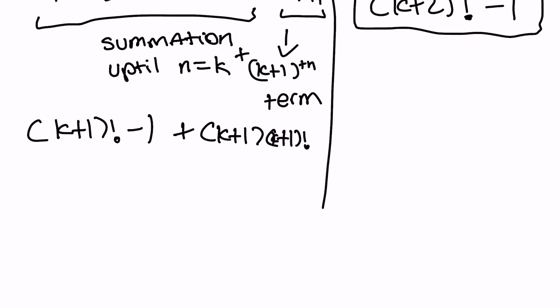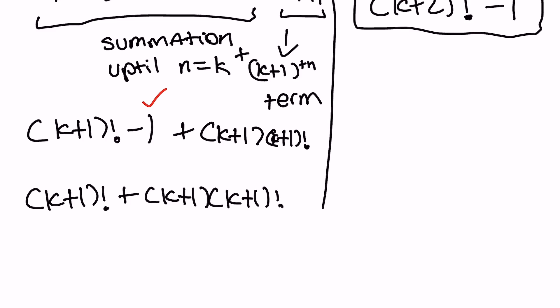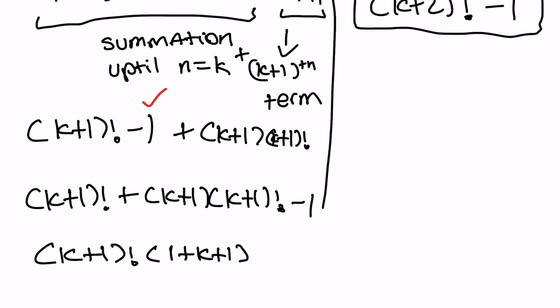Now I notice that the minus ones appear on both sides, so I'll set those aside. I'll rewrite this as k plus one factorial plus k plus one times k plus one factorial, minus one. Then I see that k plus one factorial is common in both terms being added, so I'll factor that out, giving me k plus one factorial times one plus k plus one, minus one.